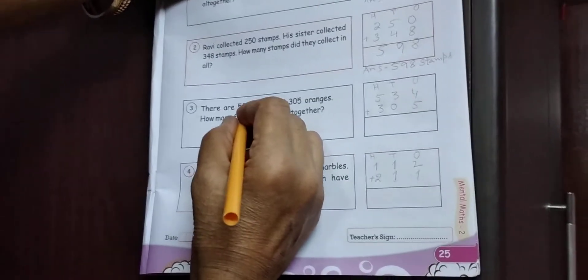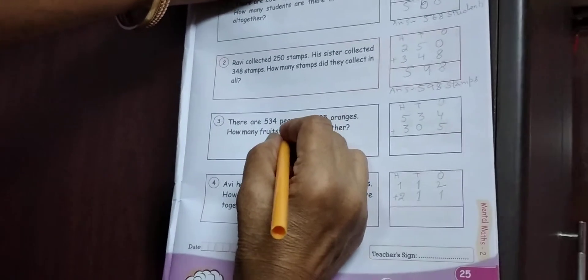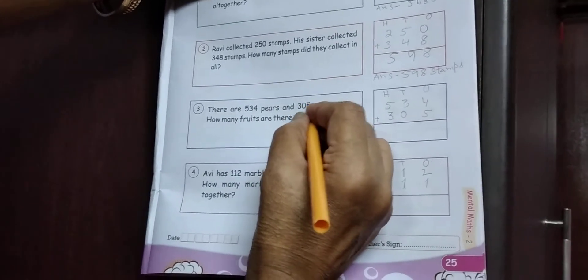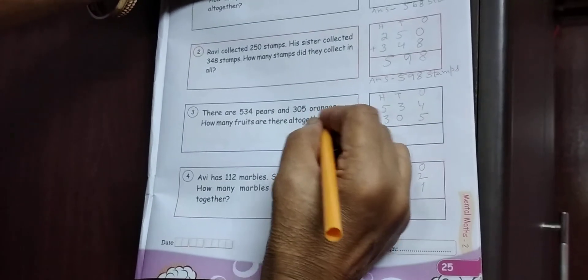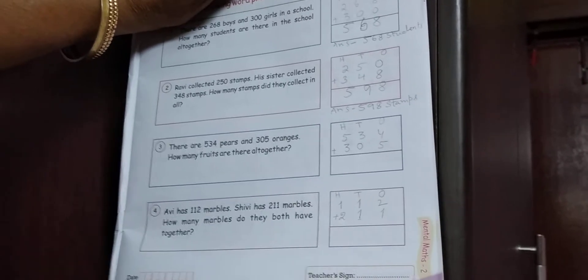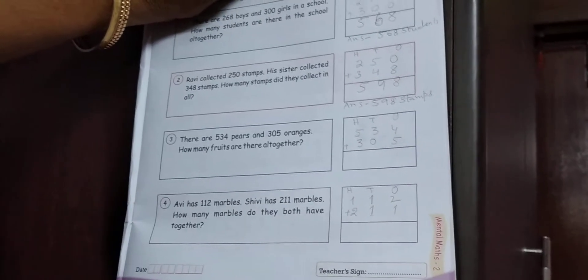Next, number 3. There are 5, 3, 4. 534. Pears. P, E, A, R, S. Pears. And 305. 305 oranges. How many fruits are there all together? 534 pears and 305 oranges. Eks sathe kitna? Eks sathe kitna fruits wa? Students? Dekho.